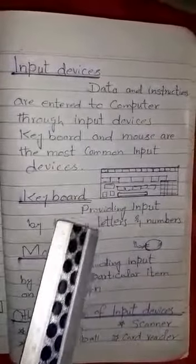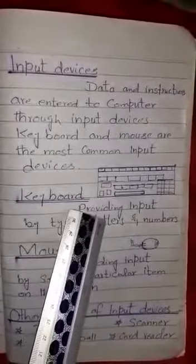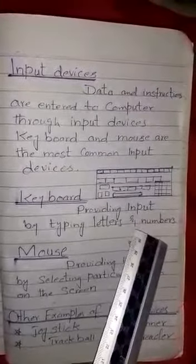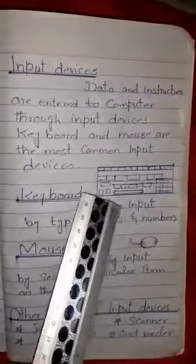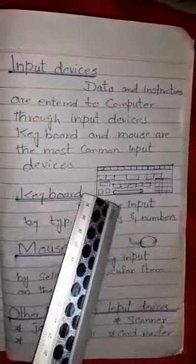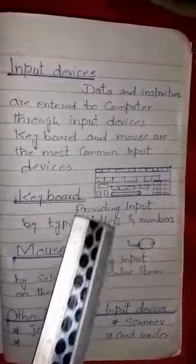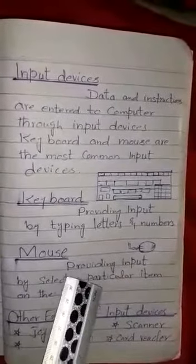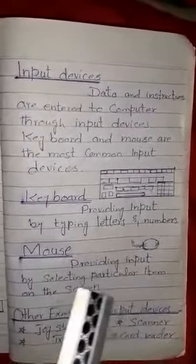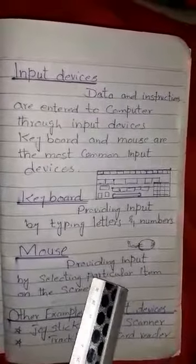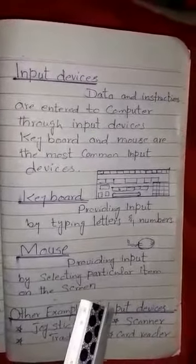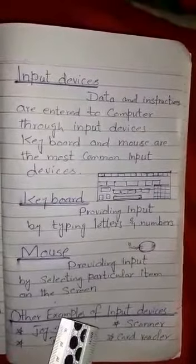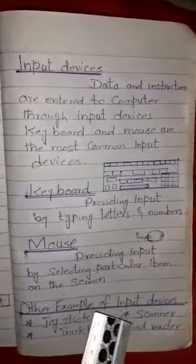The keyboard provides input by typing letters and numbers — we type letters and numbers on the keyboard. The mouse provides input by selecting a particular item on the screen; the selection is done by pointing to the desired item and clicking the mouse button.